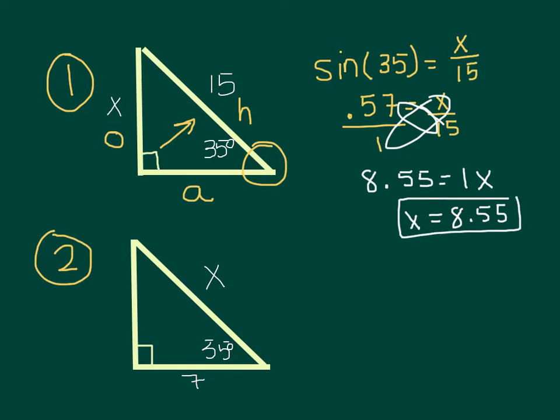Alright, let's look at the second example. Again I'm going to start by labeling my sides. The X is now my hypotenuse, the 7 is my adjacent, and the side without a label is going to be the opposite.